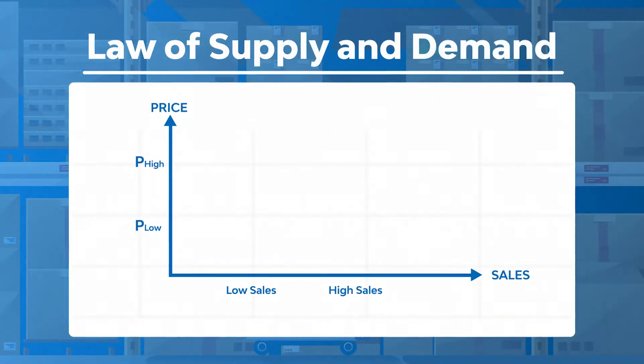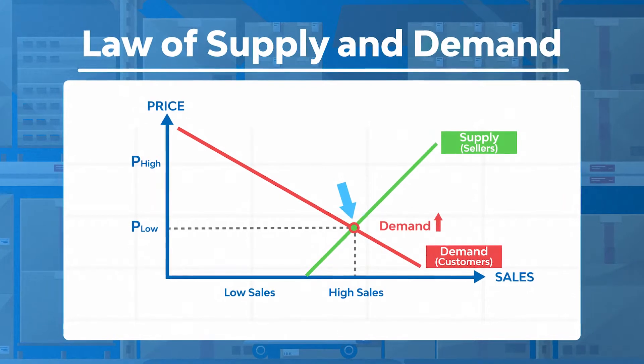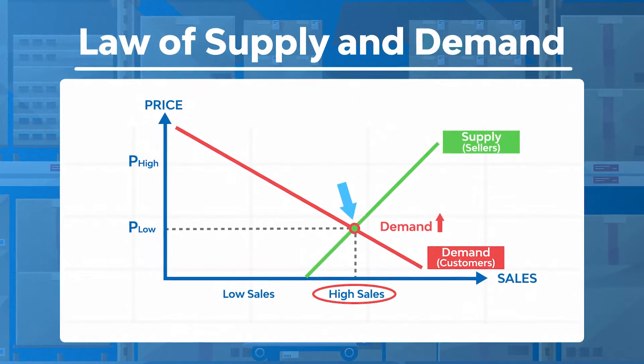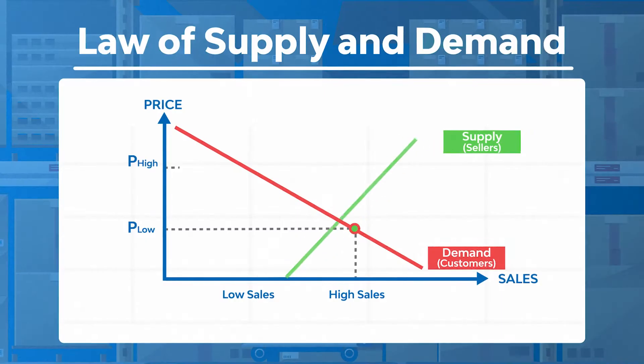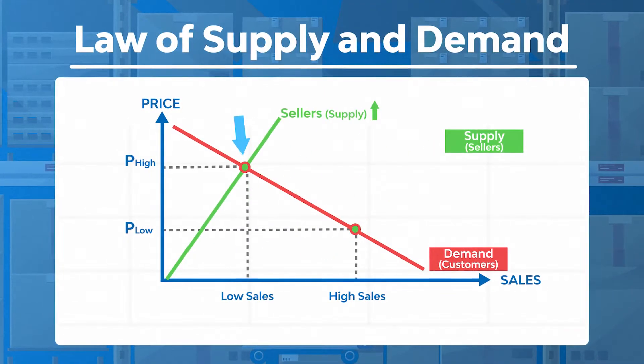According to the law of demand and supply, at lower prices, demand will be higher. Buyers will purchase more, meaning more sales, and there will be fewer suppliers selling at lower prices because there are less profits. At higher prices, there will be more sellers because of higher profits, but buyers will demand less, meaning fewer sales.